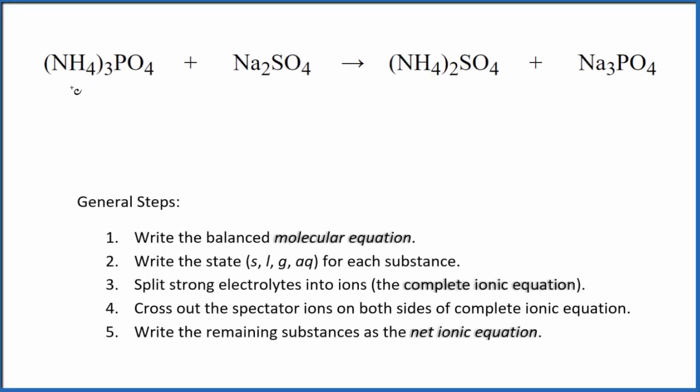Let's write the balanced net ionic equation for NH43PO4 plus Na2SO4. This is ammonium phosphate and we have sodium sulfate.